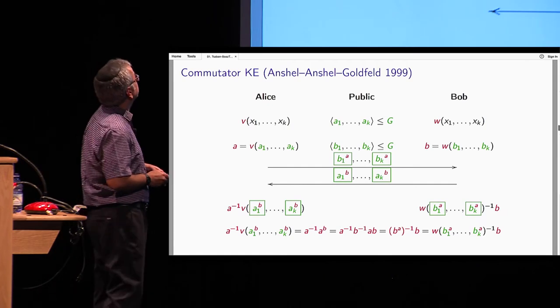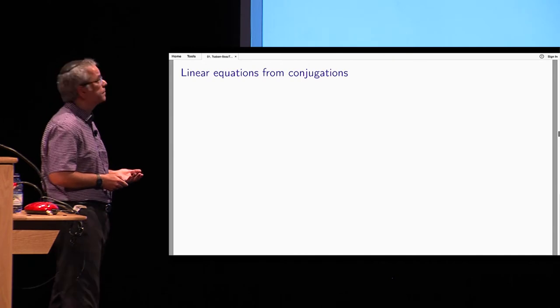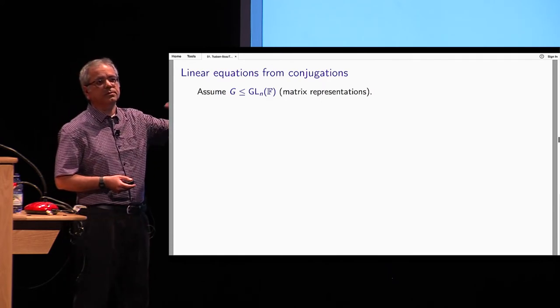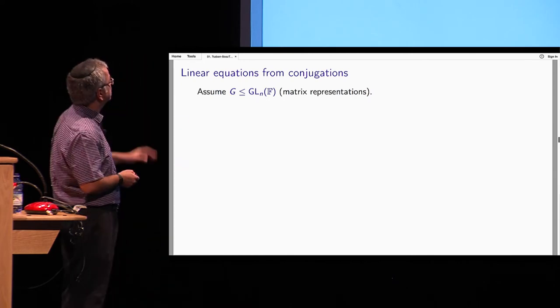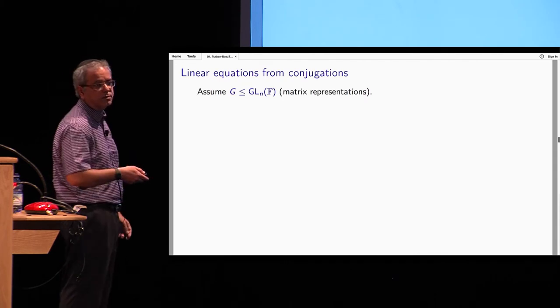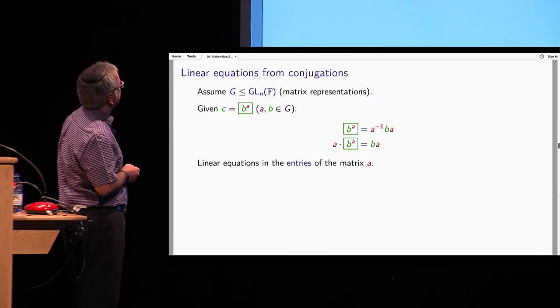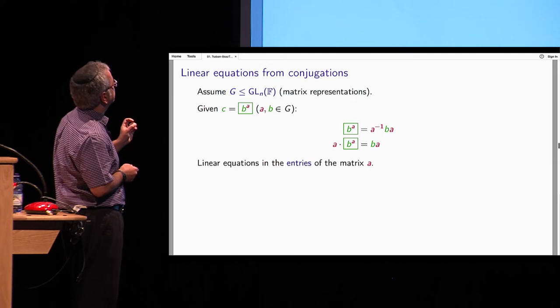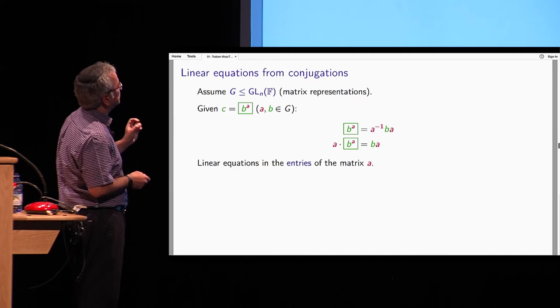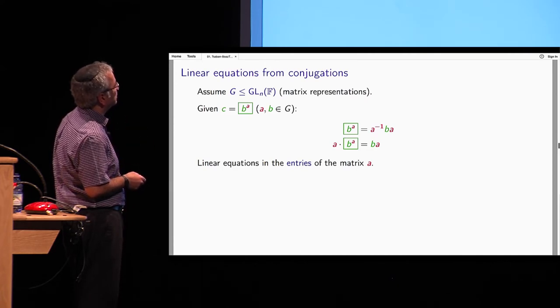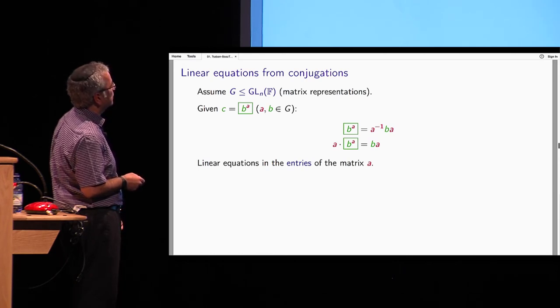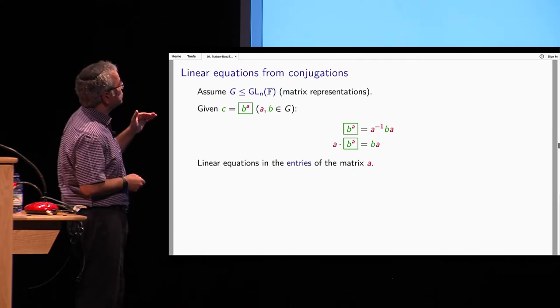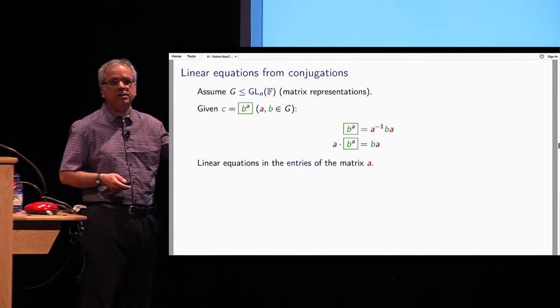So this is the system. Now let us say a few words about how to get linear equations from conjugations. So we will always assume that g is a group of matrices. Why? Because in all practical cases, there are ways to represent the group, in some sense, as a group of matrices. I will avoid all these technicalities and just assume outright that g is a group of matrices, n by n matrices over a finite field. So now the elements are matrices.